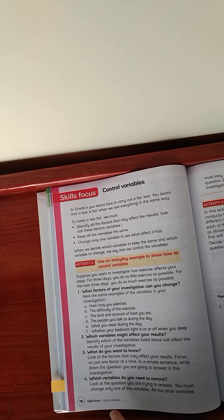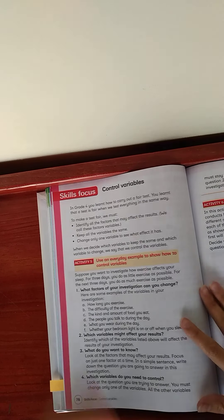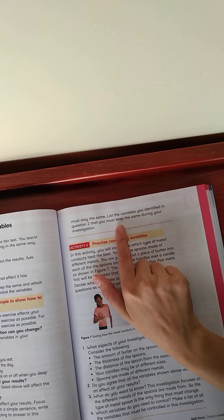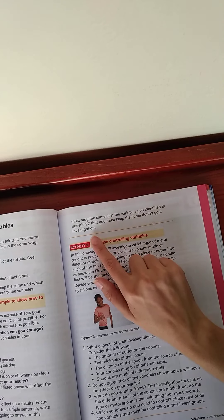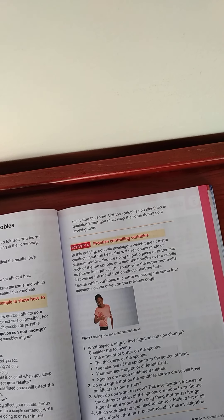Which variable do you need to control? Look at the questions you are trying to answer. You must change only one of the variables. All the other variables must stay the same. List the variables you identify in question two that you must keep the same during your investigation. So, once again, that's just the same thing. Look at the investigation. What should you keep the same? What is allowed to be different that won't affect the outcome?